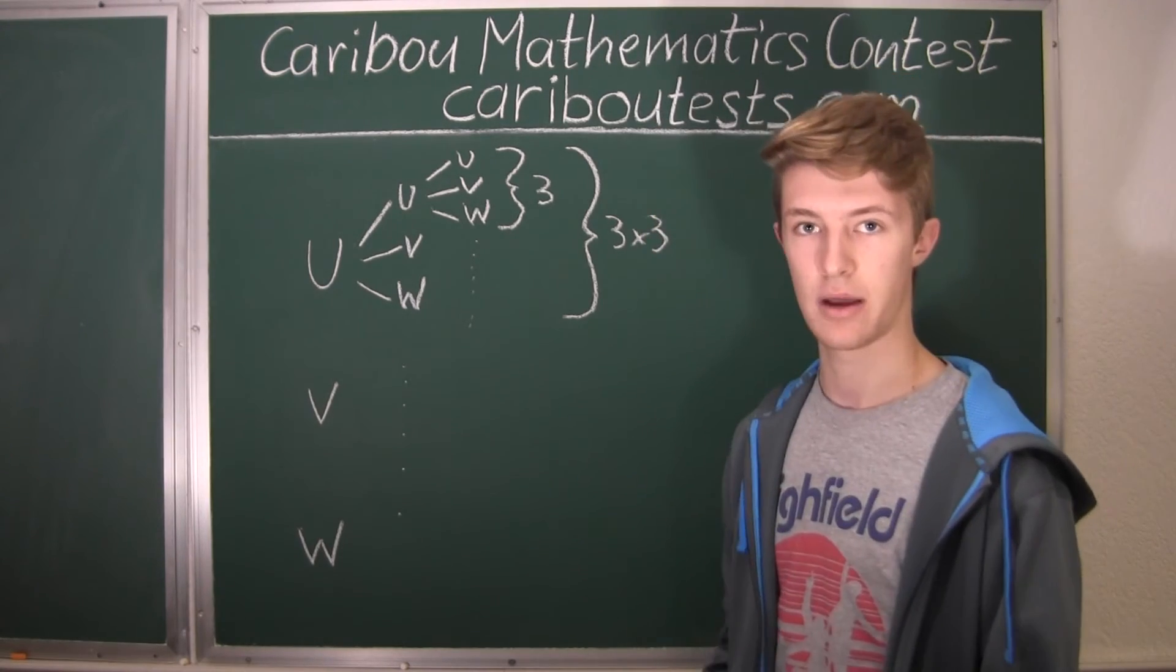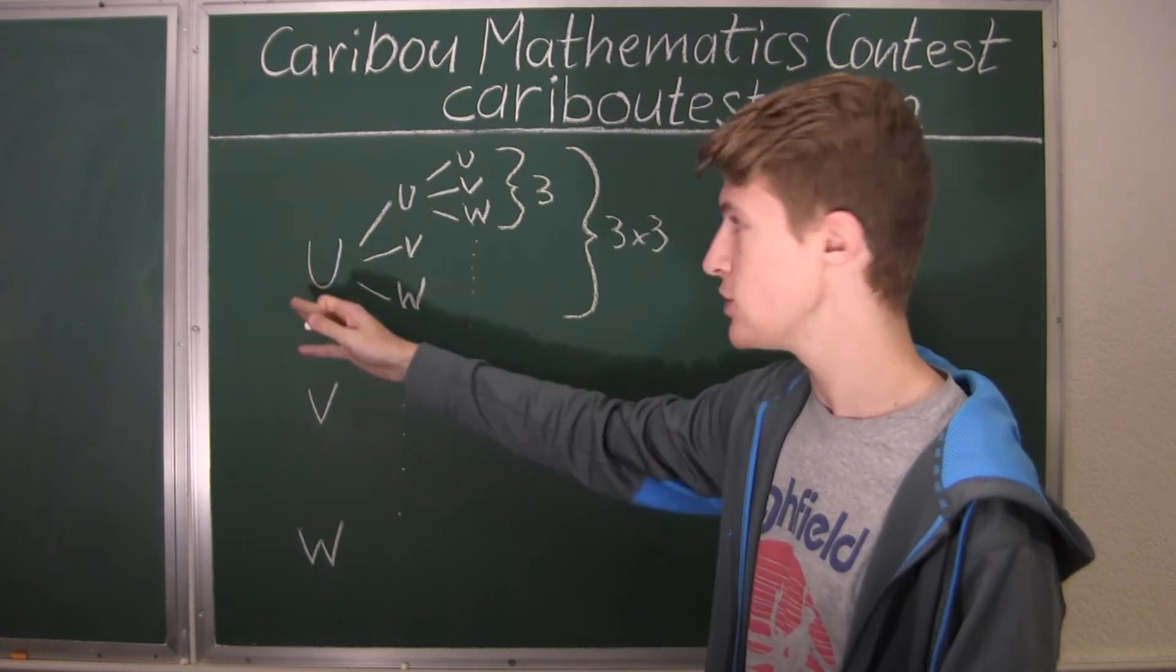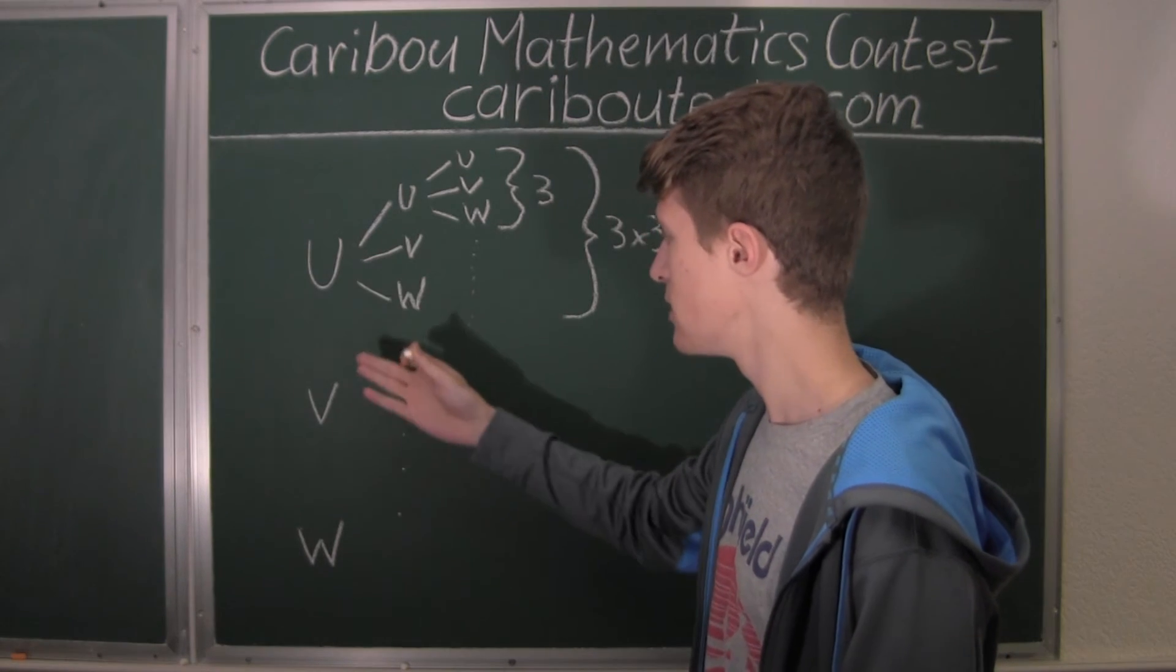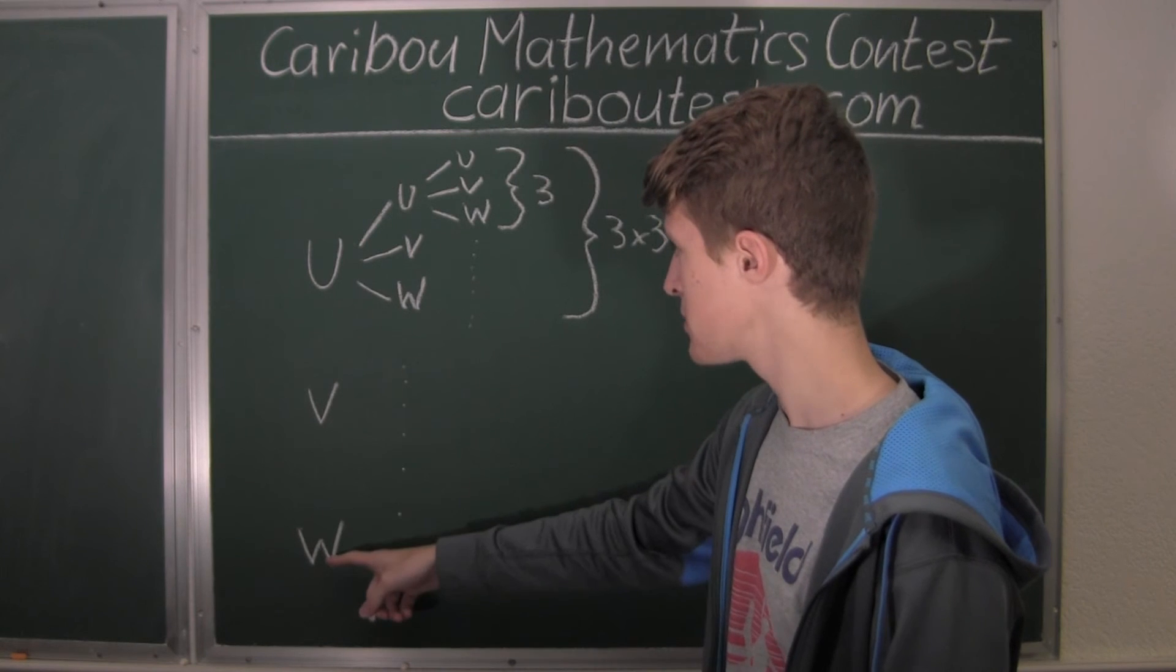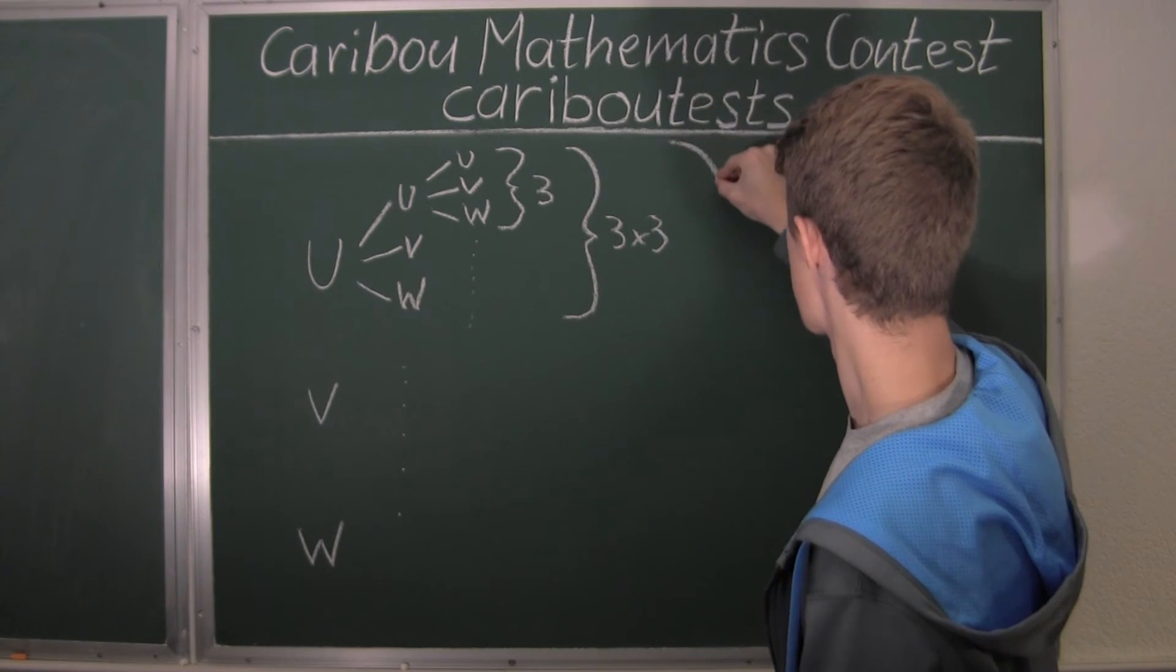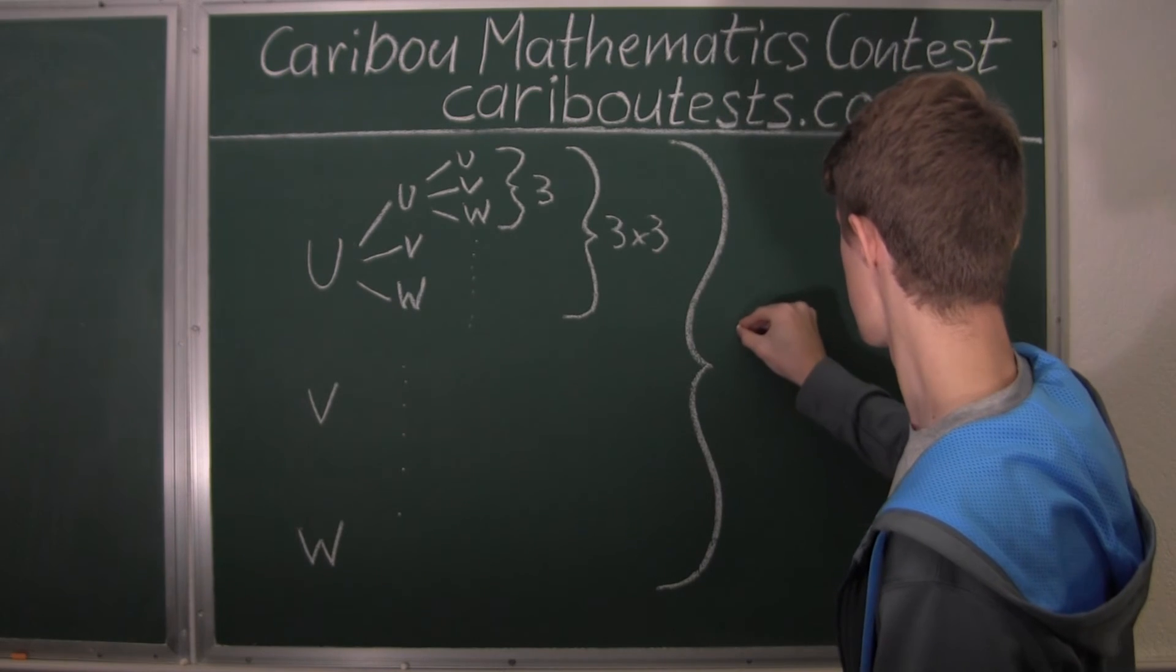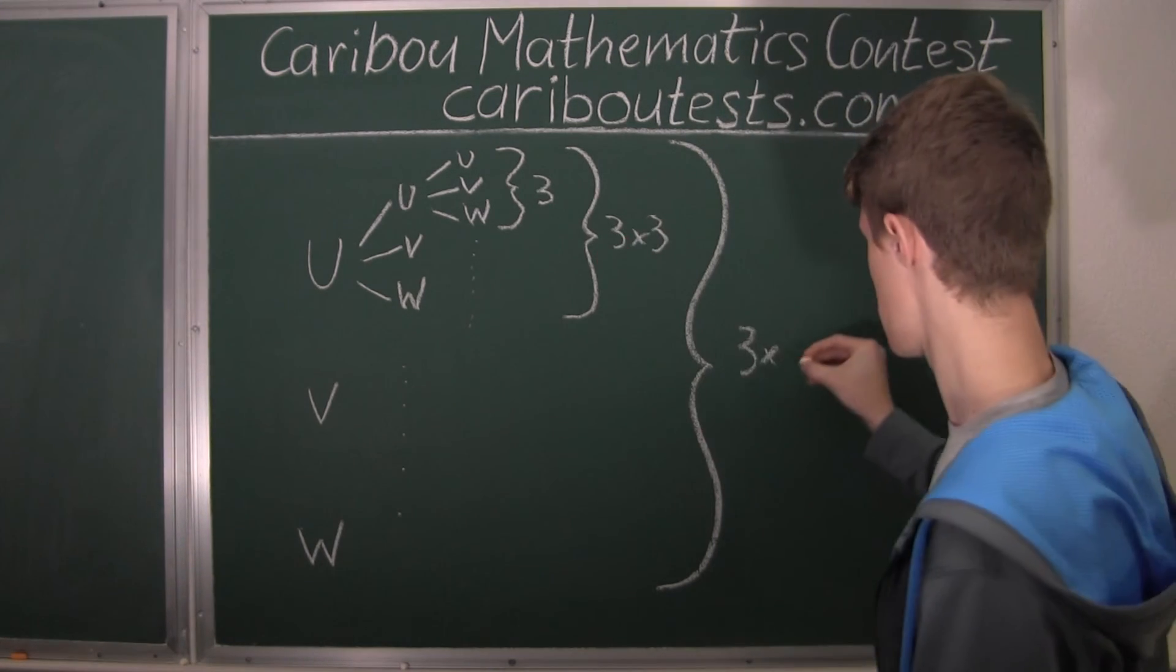And now, all I've done is shown combinations for the first letter being U. But again, we have three different options for the first letter. We can have U, V, or W. So it would be 1, 2, 3 times this number here. Okay? So we have 1, 2, 3 times this number here, which is 3 times 3.